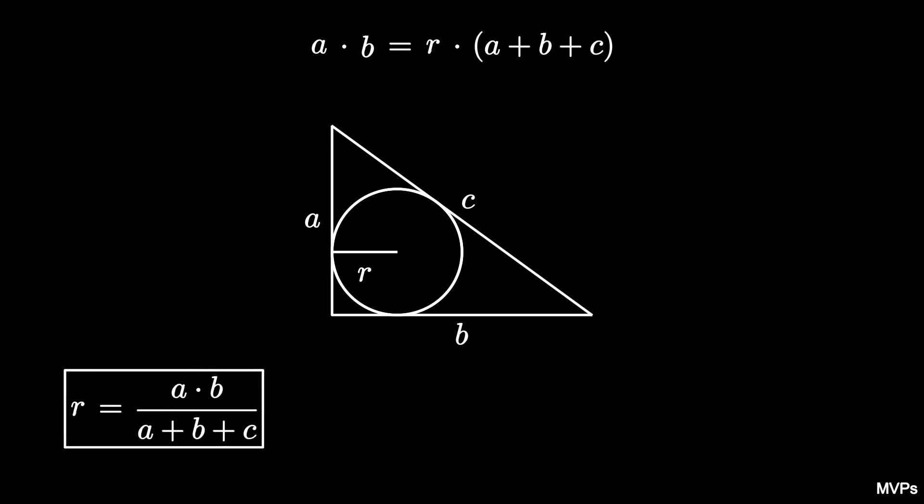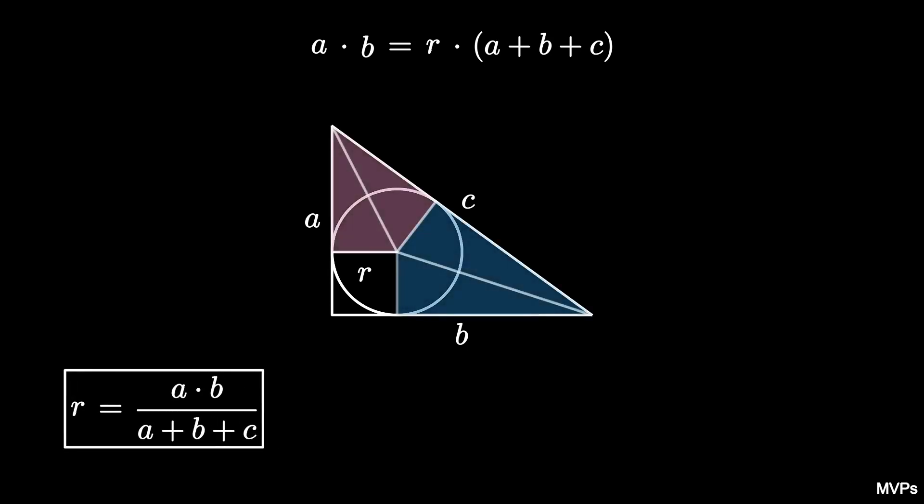But that's not all. We can do more. The four triangles from the original decomposition tell us extra information. The leg of one triangle is A minus R and the leg of the other is B minus R.